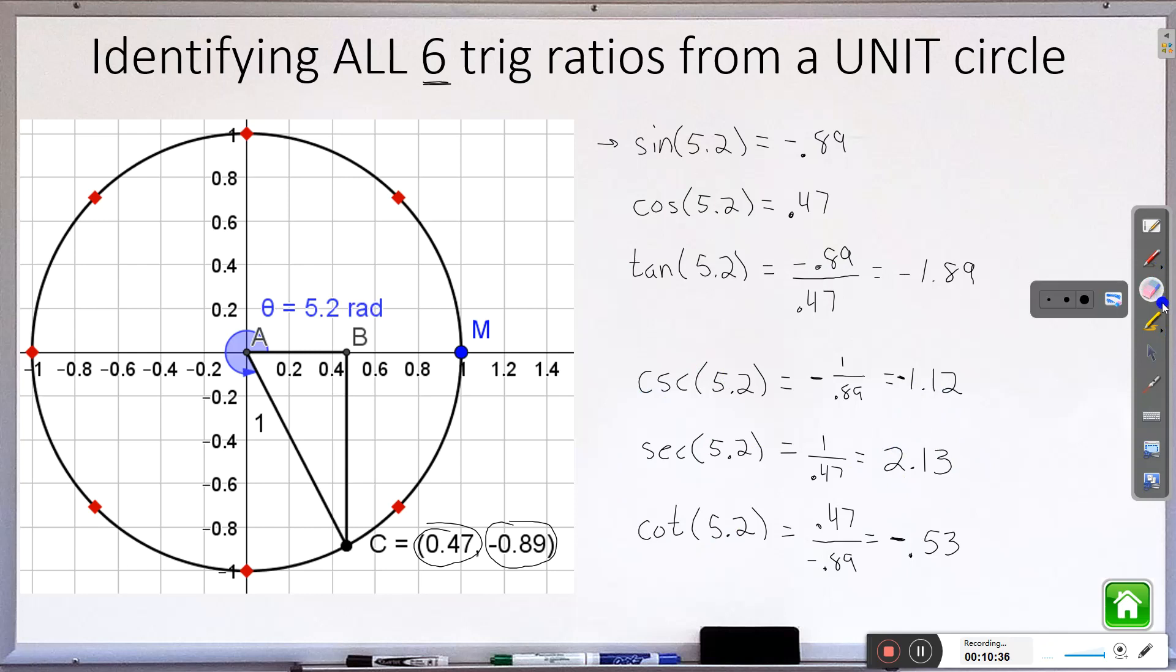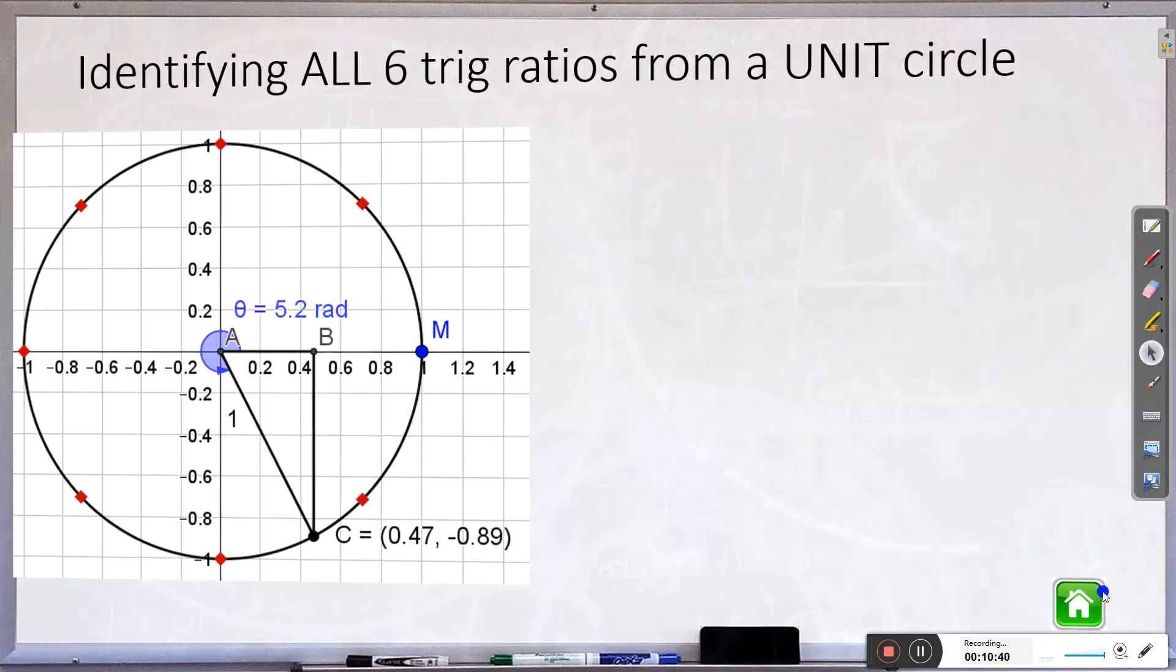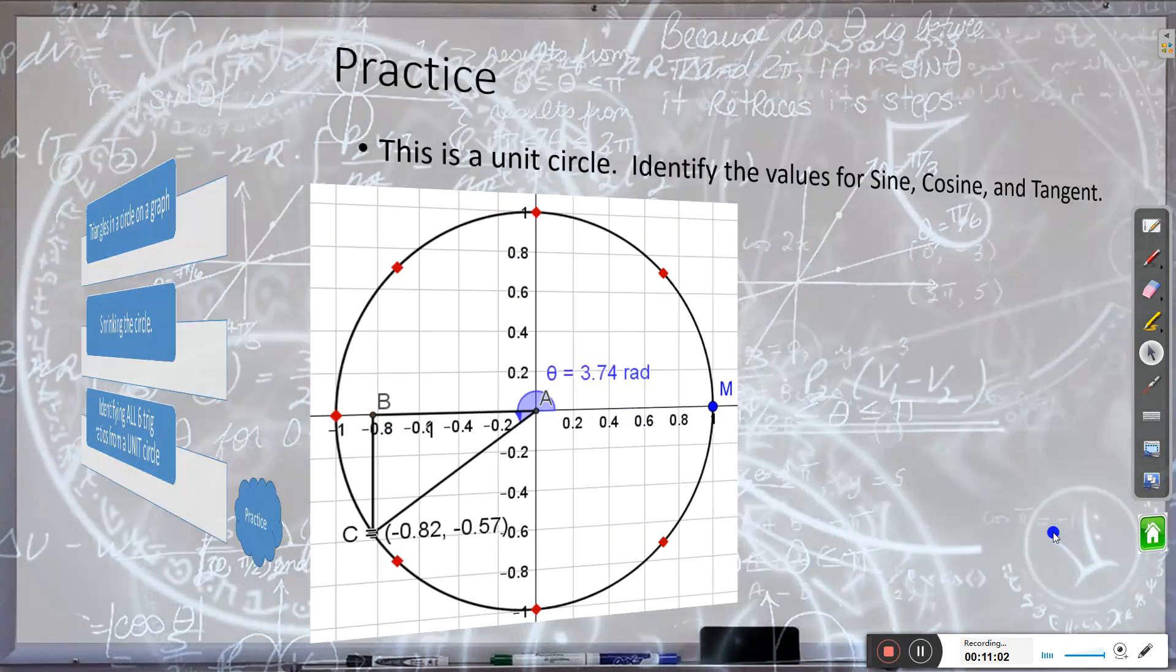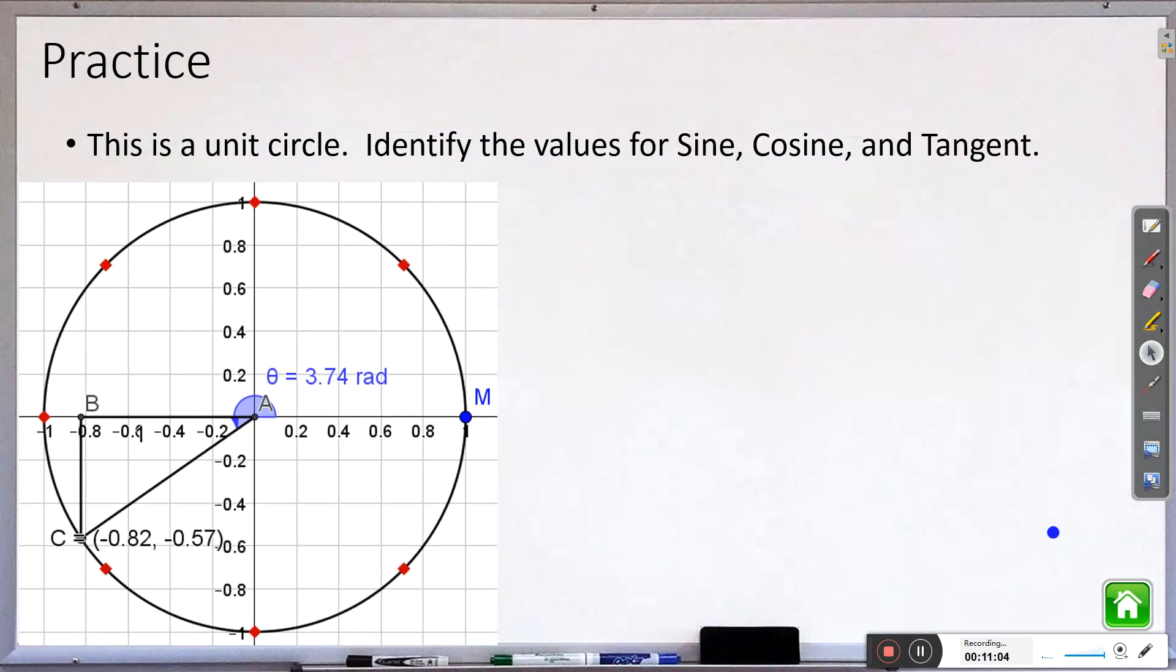Alright that's all I wanted to show you here. Get you some practice problems here. But again in a nutshell we took our triangles inside the circle. We shrunk the circle down so it only has a radius of 1 and that again simplified our trig functions. Sine is now just our y. Cosine is just our x. Tangent is still y over x. So using those ideas go ahead and try to identify all six trig functions or at least these three sine, cosine, and tangent from this circle. And stop.